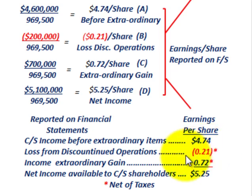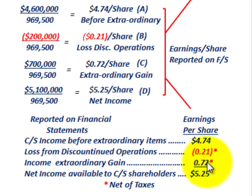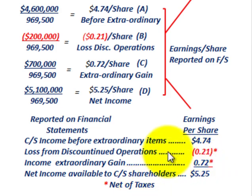Everything has to be reported net of taxes. We didn't have any tax calculations here — we were just given the numbers already net of taxes. That's how we'd be reporting it.